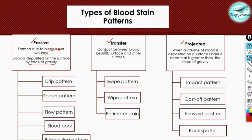The second type is transfer. Here, contact occurs between the blood-bearing surface and another surface. The blood-bearing surface contains the blood, while the other surface is where the blood is transferred when both surfaces come into contact. These are termed transfer blood stain patterns.